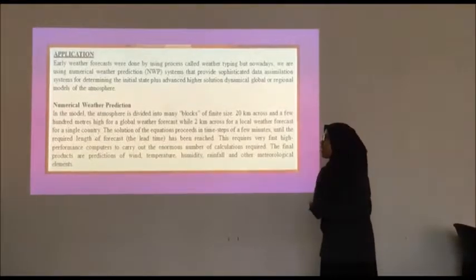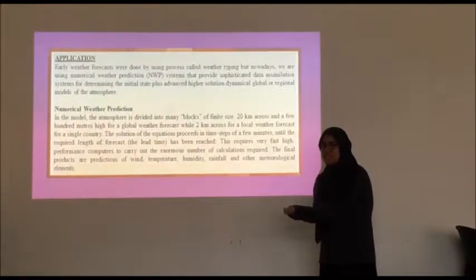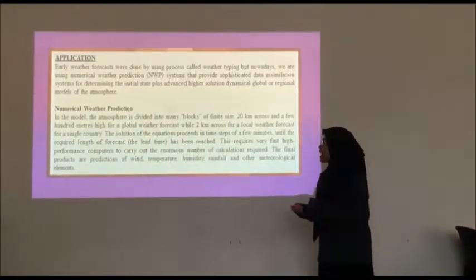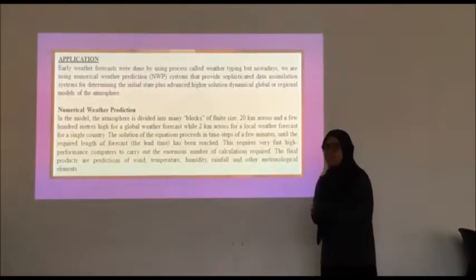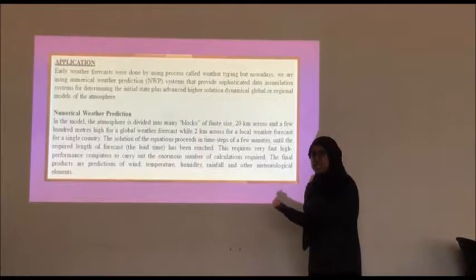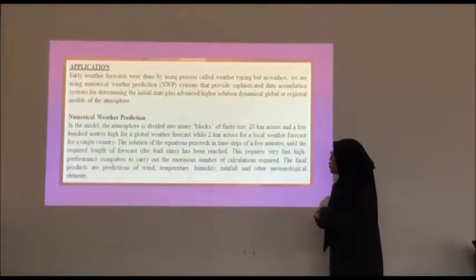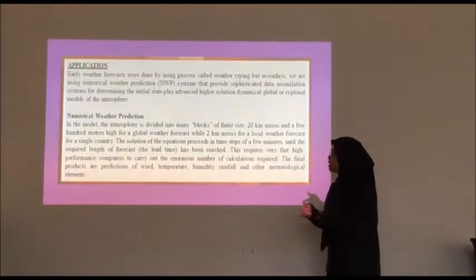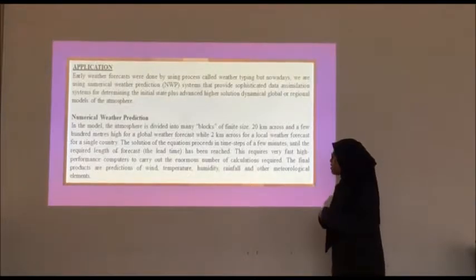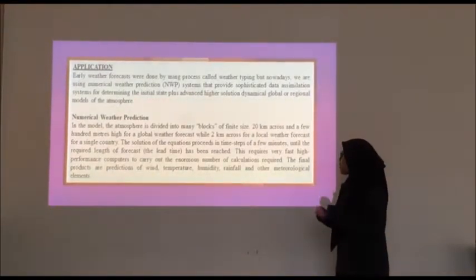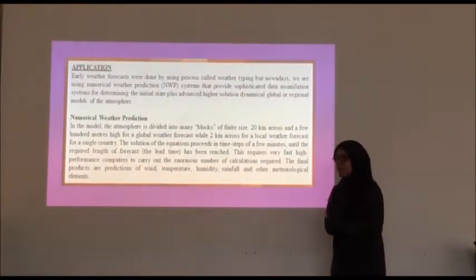Now for the application. Early weather forecasts were done by using a process called weather typing. But nowadays, we are using numerical weather prediction, which is NWP systems that provide sophisticated data assimilation systems for determining the initial state plus advanced higher resolution dynamical global or regional models of the atmosphere. In the model, the atmosphere is divided into many blocks of finite size, 20 km across and a few hundred meters high for a global weather forecast, or 2 km across for a local weather forecast for a single country. The solution of the equations proceeds in time steps of a few minutes until the required length of forecast has been reached.